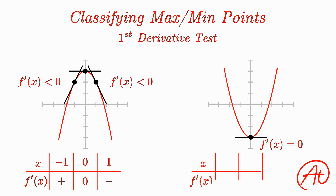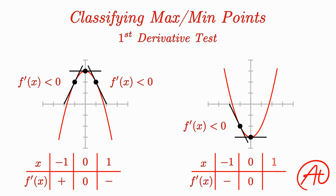Moving on to the minimum case: if we plug in a point to the left like x equals negative one, we get some negative slope value, where a point to the right gives a positive slope value. So that's the first derivative test. Once you find your max or min point, you plug in x-values to the left and right of it into the first derivative to classify it. If the slope goes from positive to zero to negative, the point is a maximum. If the slope goes from negative to zero to positive, it's a minimum.